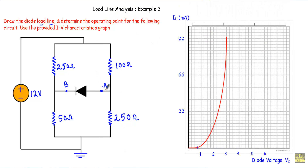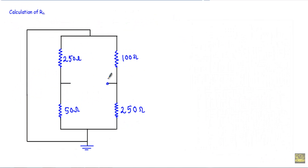To calculate RTH with respect to terminals A and B, I first remove the PN junction diode from those terminals. With the diode removed, I calculate Thevenin resistance. While calculating RTH, I replace the voltage source with a short circuit. The resulting circuit has a third terminal C — as we have shorted that path it continues up to this point.